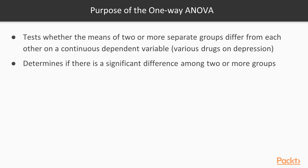The purpose of a one-way ANOVA is to assess multiple groups and see if those groups differ on a continuous dependent variable. For example, we may have different drug treatments and want to see if they differ in how they affect depression. We need at least two groups, but can have as many as we'd like. Ultimately, we're determining if there are significant differences among two or more groups.